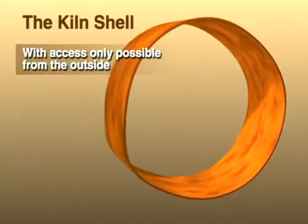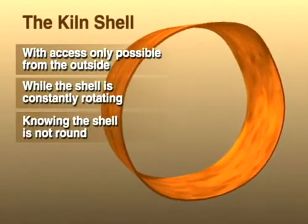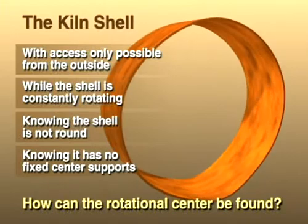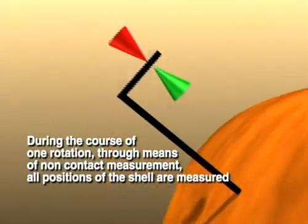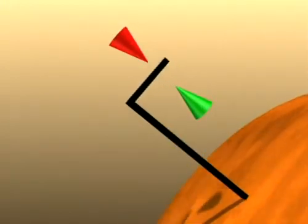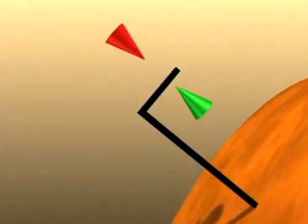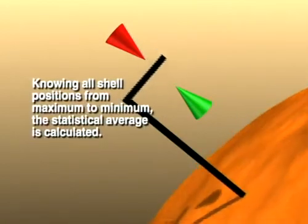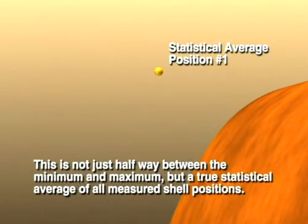With the axis only accessible from the outside while the shell is constantly rotating, knowing it is not round, and knowing it has no fixed center or end supports, how can the rotational center be found? During the course of one rotation, through the means of non-contact measurement, all positions of the shell are measured. Knowing all shell positions from the maximum to the minimum, the statistical average shell position is calculated. This is not just halfway between the minimum and maximum, but a true statistical average of all positions measured.